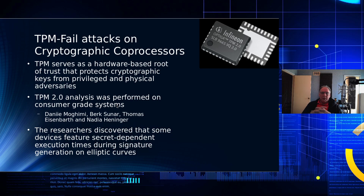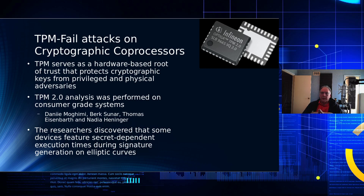So what happened? The researchers have termed this TPM fail. It is an attack on the cryptographic co-processors that the researchers performed, and they have exposed the vulnerability. TPM serves as the hardware-based root of trust for operating systems — it is used in everything today.